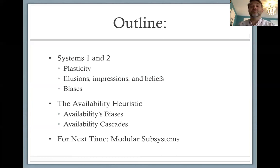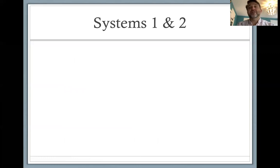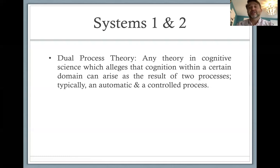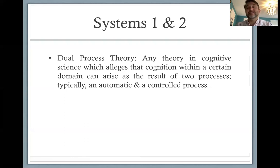Let's get started by talking about the basic distinction between system one and system two. When Kahneman uses this concept — system one and system two processes — he's engaged in an approach to cognition called dual process theory. A dual process theory is any theory in cognitive science which alleges that cognition within a certain domain can arise as the result of two processes, typically an automatic process and a controlled process.